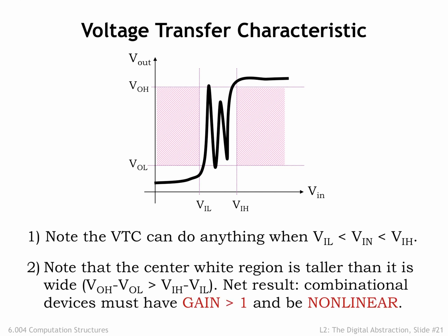Second, note that the center white region bounded by the four voltage thresholds is taller than it is wide. This is true because our signaling specification has positive noise margins, so V sub OH minus V sub OL is strictly greater than V sub IH minus V sub IL. Any curve passing through this region, as the VTC must, has to have some portion where the magnitude of the slope of the curve is greater than 1. At that point, a small change in the input voltage produces a larger change in the output voltage. In electrical terms, we would say the device has a gain greater than 1 or less than minus 1, where gain is defined as the change in output voltage for a given change in input voltage.